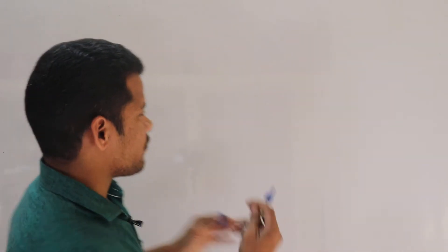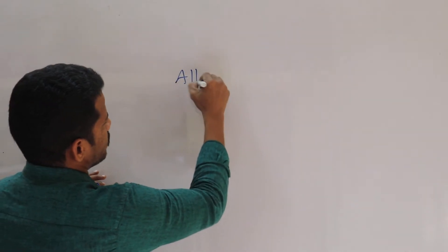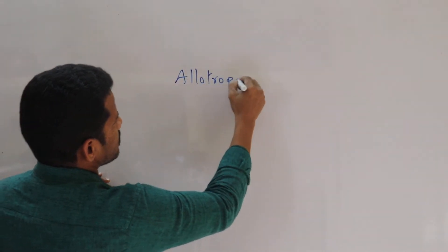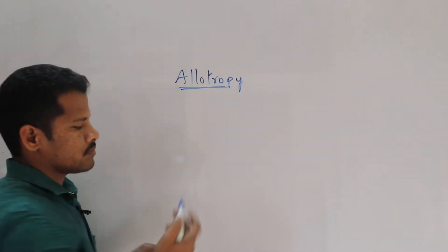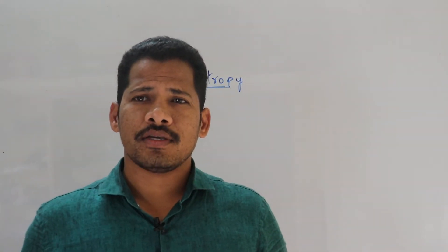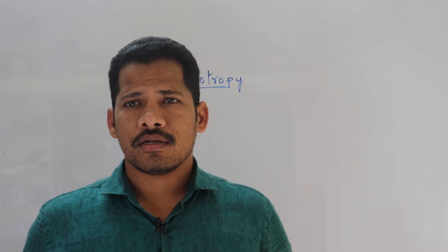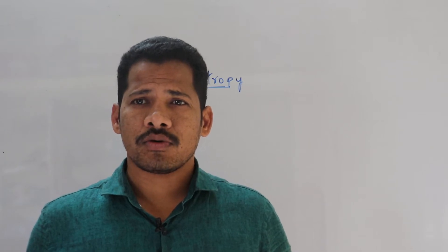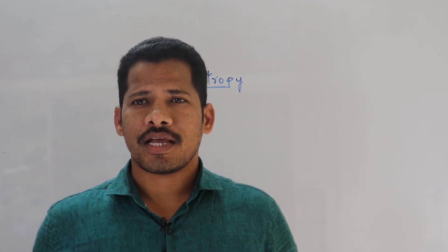You already know about this — you studied it in lower classes also, it is not a new topic. Today we are going to discuss about allotropes. Allotropy is nothing but elements having similar chemical properties but existing in different physical forms. That is called allotropy.